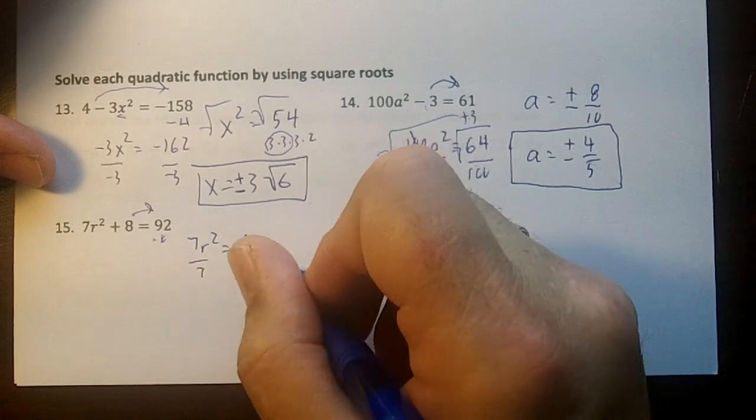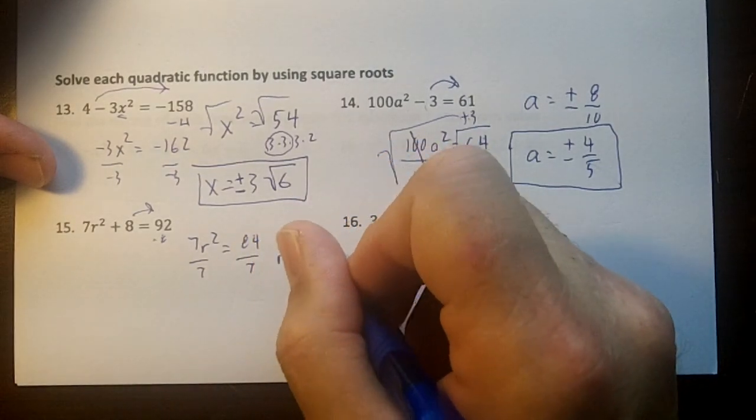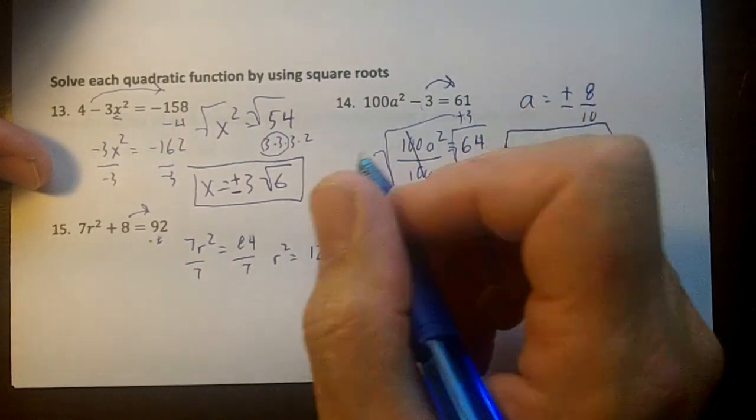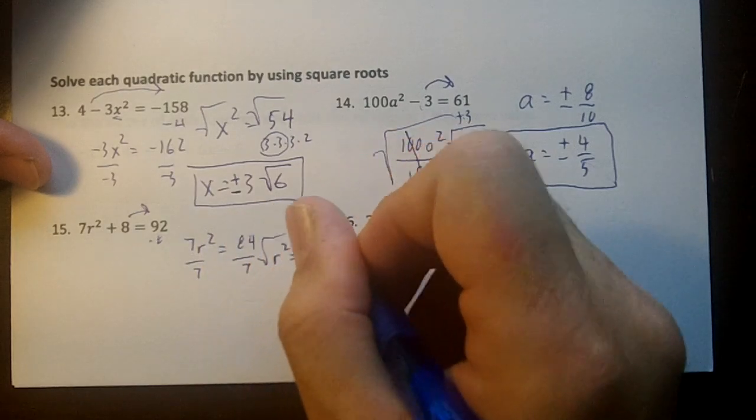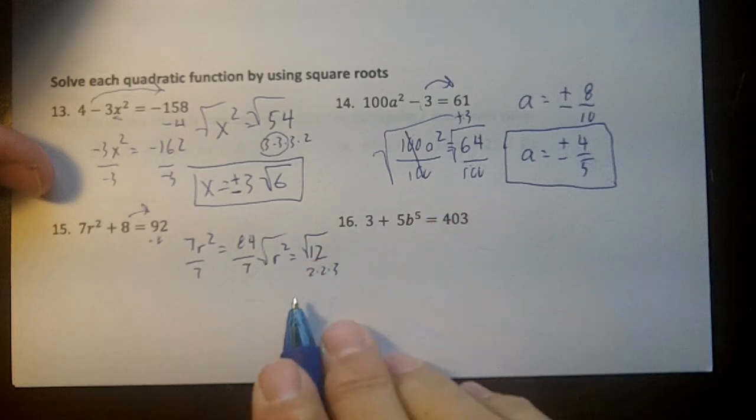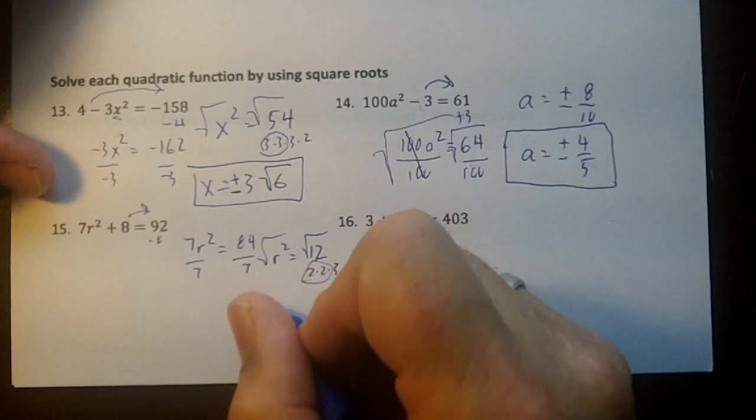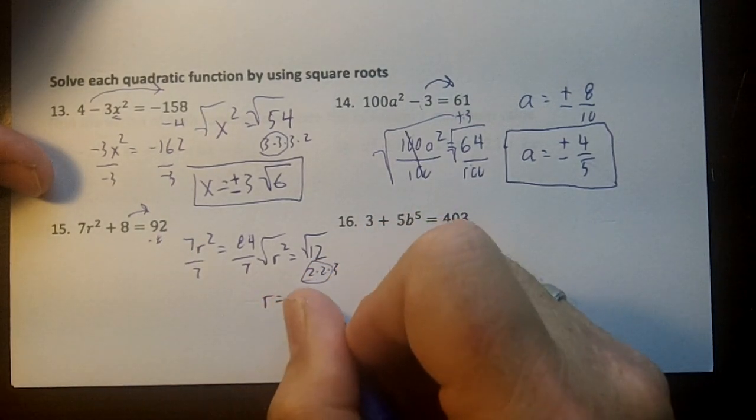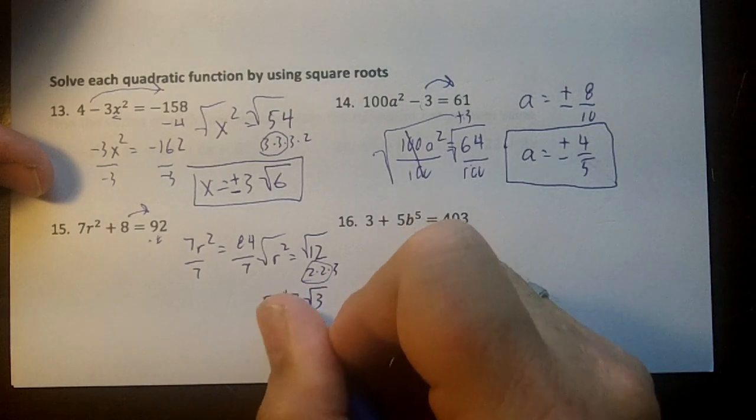Divide by 7, you'll get r squared equals 12. Square root both sides. On this one, this is not a perfect square, so we're going to write down the factors, 2 times 2 times 3. Circle the 2, so I'm going to get r equals plus or minus 2 square root of 3, right?